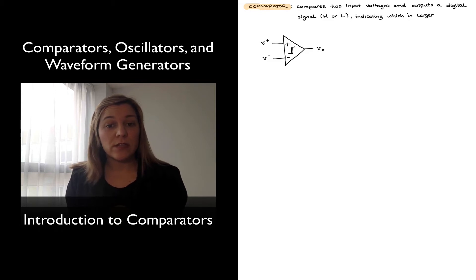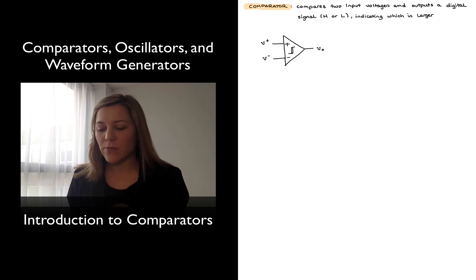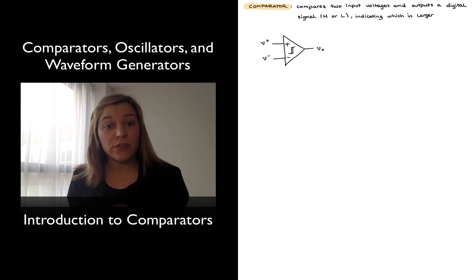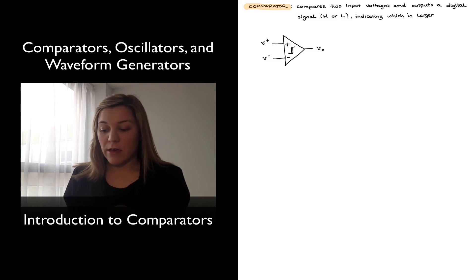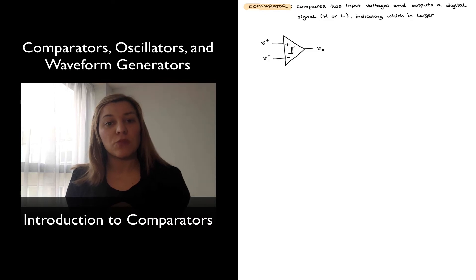A comparator is a device that is similar in structure to an op-amp in that it has two input signals — a positive input signal and a negative input signal, or a non-inverting and inverting input signal — and it has an output signal. One of the key differences with respect to the op-amp is that a comparator is meant to be operated as a non-linear device, meaning it compares the two input voltages and will output a binary signal, either a high or a low signal depending on whether the positive input terminal is at a higher voltage than the negative input terminal.